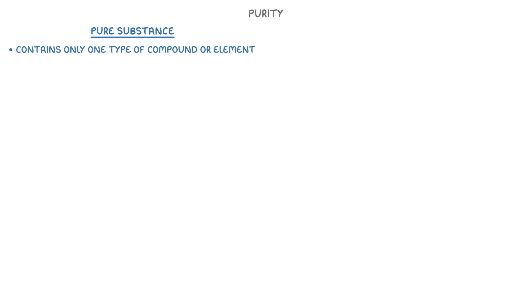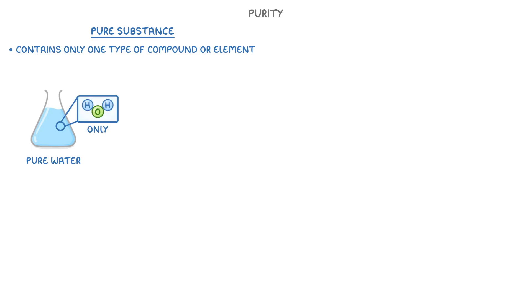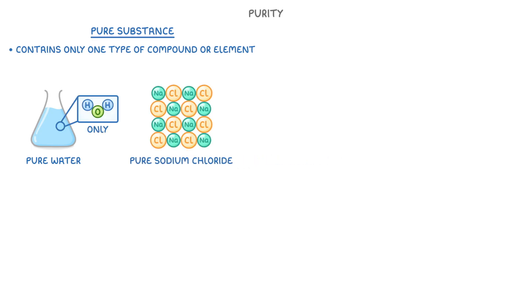First though, we need to get used to some terminology. In chemistry, a pure substance is something that contains only one type of compound or element, so isn't mixed with anything else. For example, we could have pure water, which only contains water molecules, or pure sodium chloride, because each of these is its own compound.